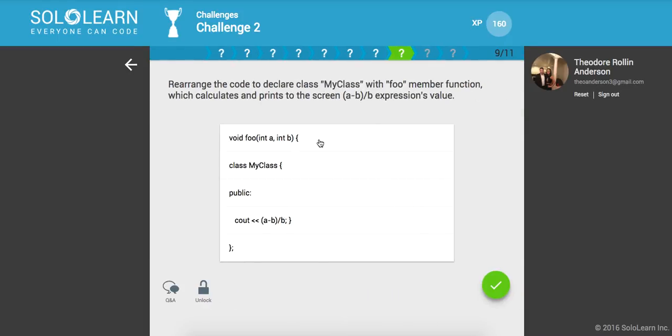Rearrange the code. Declare my class with foo member function, which calculates and prints the screen A minus B divided by B expression value. Okay. So here we have class my class. And then inside of here we have this public void foo. I'm just going to output that. All right.